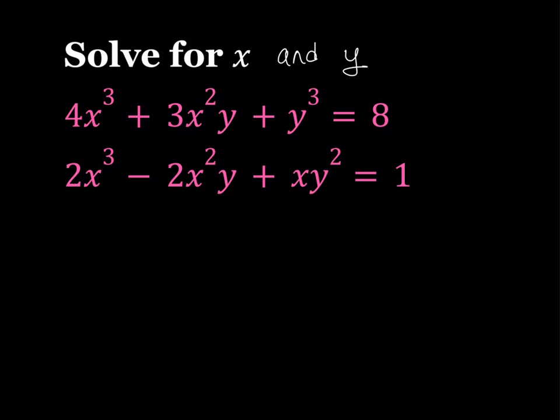So we have 4x³ plus 3x²y plus y³ equals 8 and 2x³ minus 2x²y plus xy² equals 1. And we're going to be solving for x and y values.